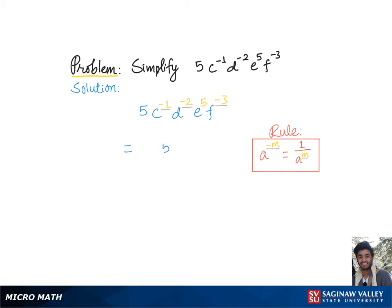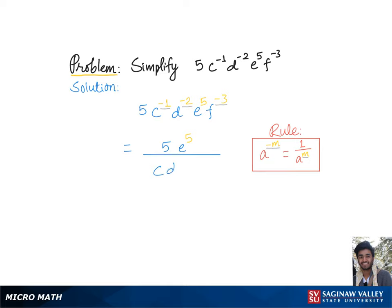This gives us 5e^5 over c to the positive 1 (which can simply be c) times d to the second power times f to the third power, which is the final answer.